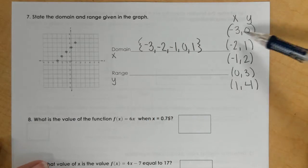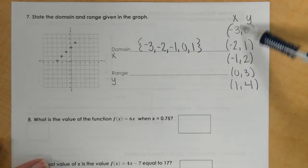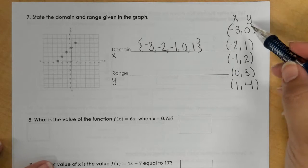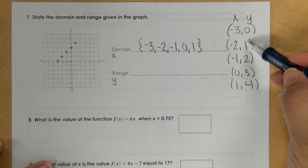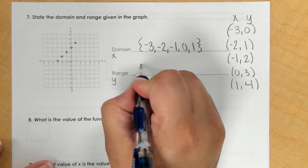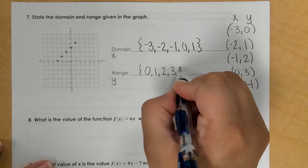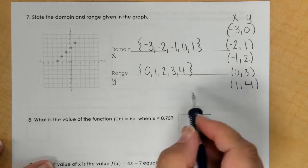So we have 5 points, 5 numbers, none of the x's repeated, so that makes sense. And then my range would be my y's. It looks like none of those repeated either. So I have 0, 1, 2, 3, and 4, also written in set notation.